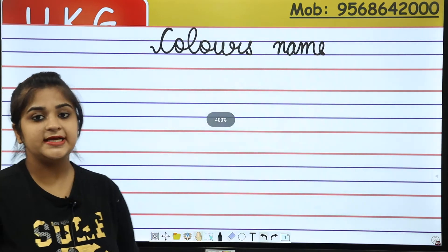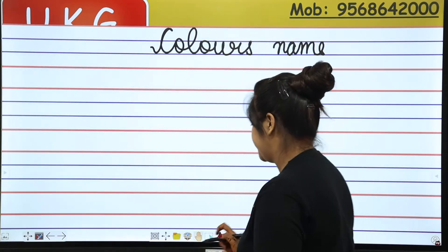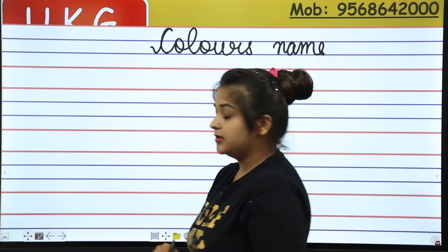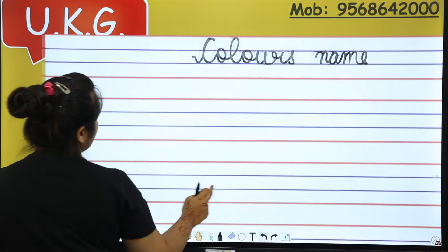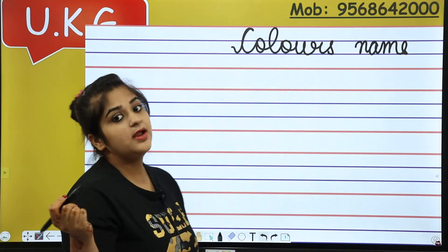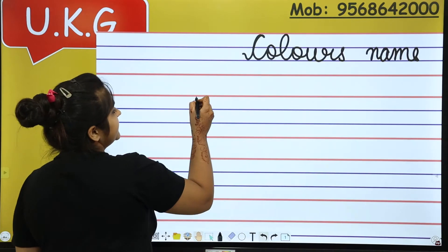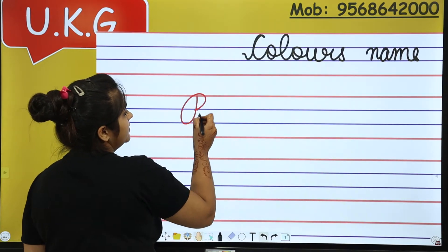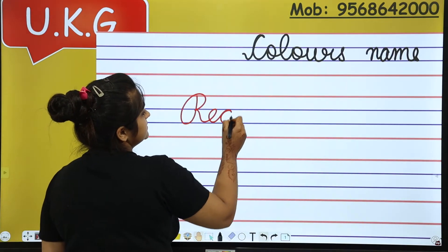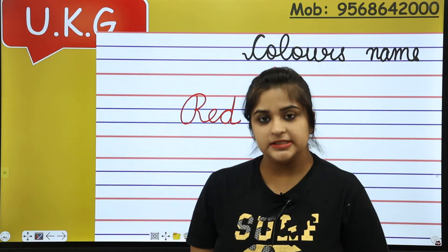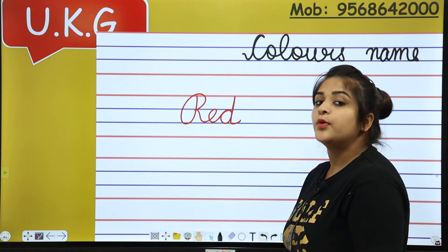Then we will start with the next line. Like ma'am, first color name is red. So ma'am, what will you do? Ma'am has red color here, but you have to write in pencil. Red is red. So ma'am, the spelling is R-E-D, red. R-E-D, red.